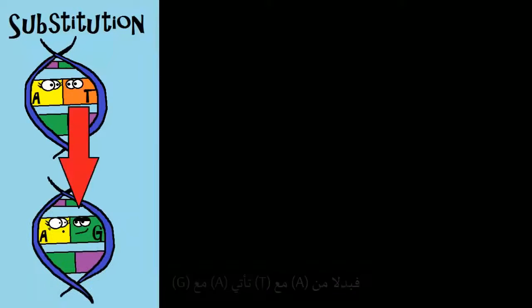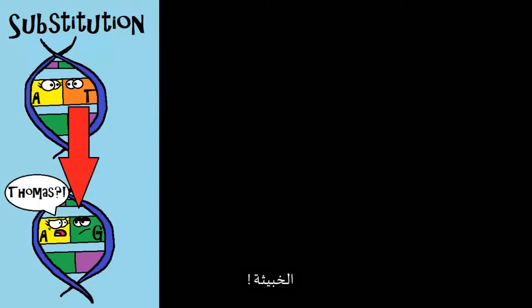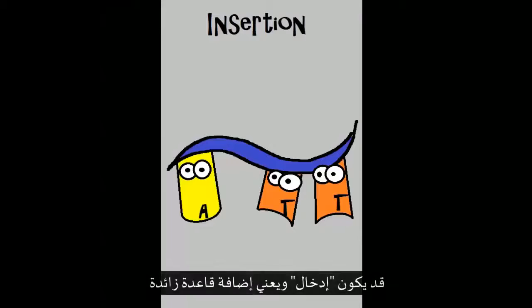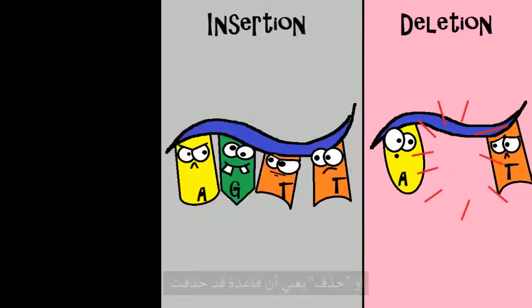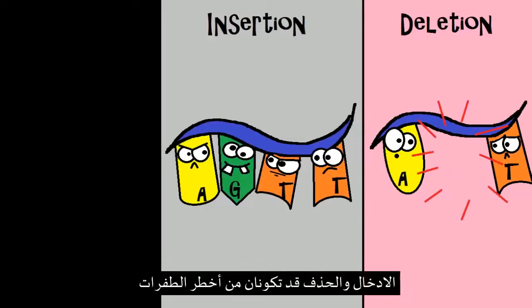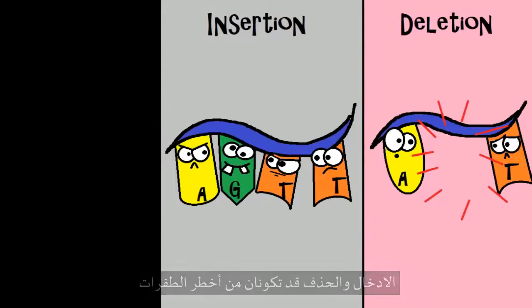Let's look at the gene mutations. First, substitution: that means you have the wrong base matched, so instead of A with T, you could put A with G. You can have insertion, which means an extra base is added in. You can have deletion, which means a base is removed.